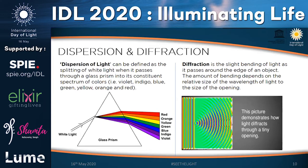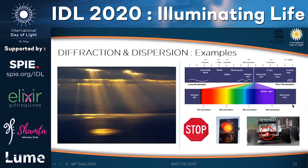Diffraction is a slight bending of light when it passes around the edge of an object. For example, whenever light falls on the edge of spectacles or glasses, it gets slightly bent — we don't see a clear image but a slightly bent one. That is the diffraction effect, and we will observe the same in examples on the next slide.